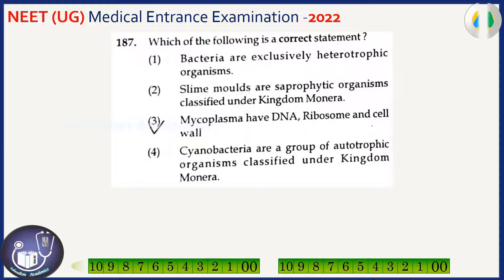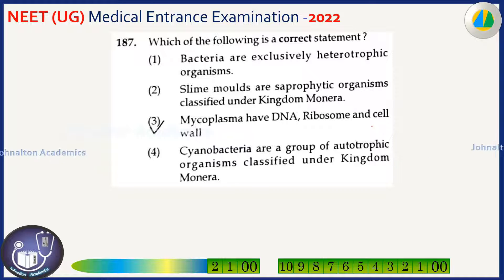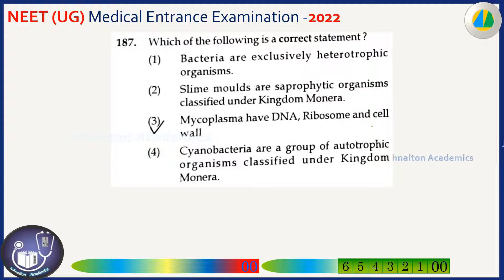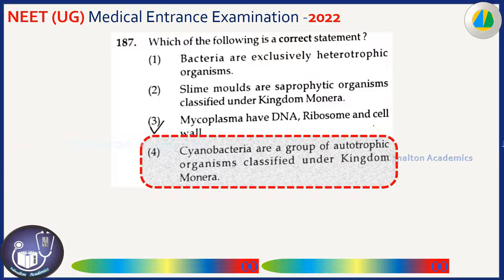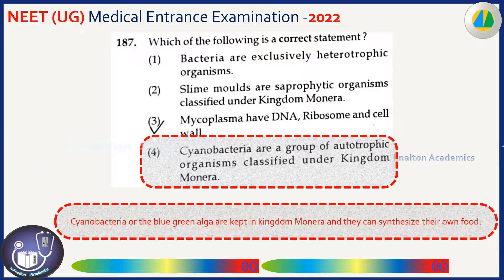Identify the correct statement. Bacteria are exclusively heterotrophic organisms — incorrect, some bacteria are not. Slime molds are saprophytic organisms classified under kingdom Monera — incorrect. Mycoplasma have DNA, glycosome, and cell wall — incorrect, as Mycoplasma do not have a cell wall. Cyanobacteria are a group of autotrophic organisms classified under kingdom Monera — this is correct.